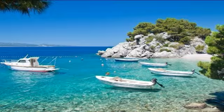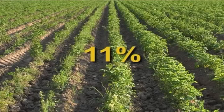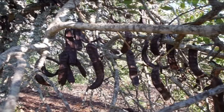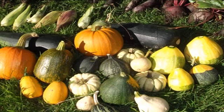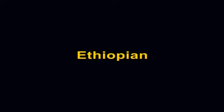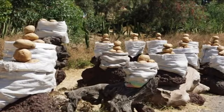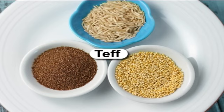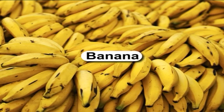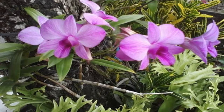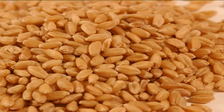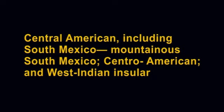Next is the Mediterranean center, which is the place of origin of about 11% of the cultivated plant species, including the olive, the carob, and many feed and vegetable crops. Next is the Ethiopian center, which accounts for about 4% of cultivated plants. It is characterized by a number of endemic species and genera — for example, Tef, Gyozot, unique species of banana, and the coffee tree. It also has original cultivated endemic species and subspecies of wheat and barley.